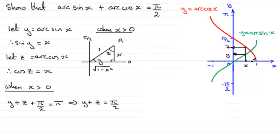It's clearly going to be true when x equals 0, because arc sine of 0 gives 0, and arc cos of 0 gives pi upon 2. So when you add 0 to pi upon 2, you clearly get pi upon 2. So I'm going to say when x is greater than or equal to 0, it clearly works.